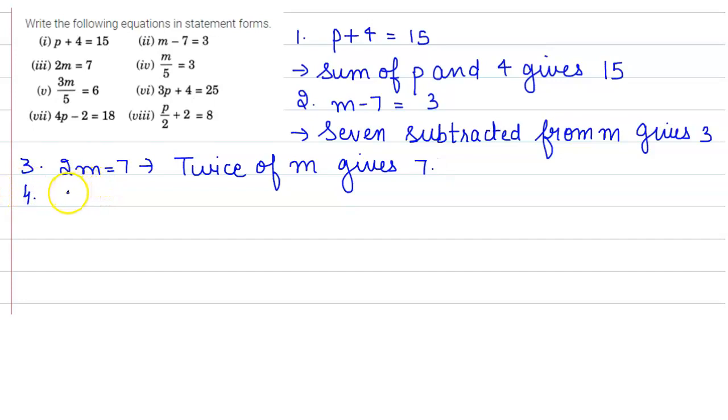Fourth is M upon 5 is equals to 3. So you can write it as M divided by 5 gives 3.